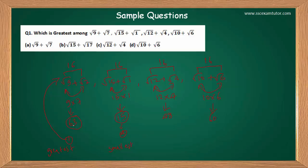63 is the greatest among those numbers — 63, 15, 48, 60 — so √9+√7 will be the greatest. After that 60 comes second, then 48 third, and √15+√1 will be the smallest. It's a very simple trick. Let's move ahead.